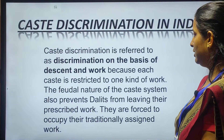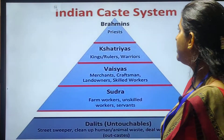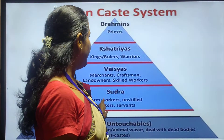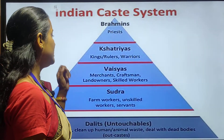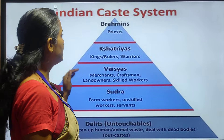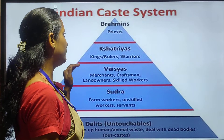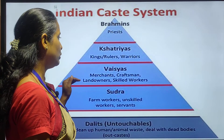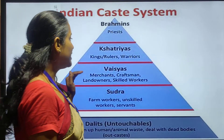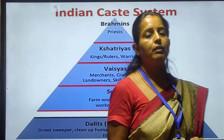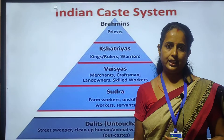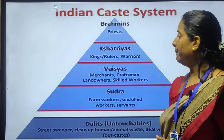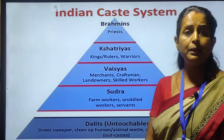Through this picture you will understand the Indian caste system. At the top of the pyramid are the Brahmins, next are the Kshatriyas, third are the Vaishyas, and fourth are the Shudras. The upper castes were given all the benefits in society, but the Shudras were not given any benefits — they were forced to do the work.